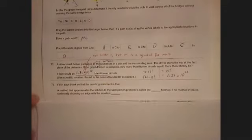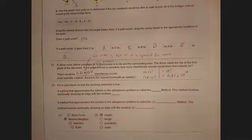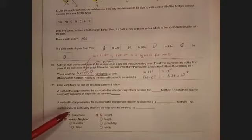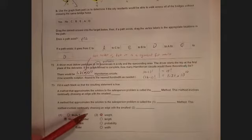Number 73 is just another definition. The method that approximates the solution to the traveling salesperson problem is called the nearest neighbor.